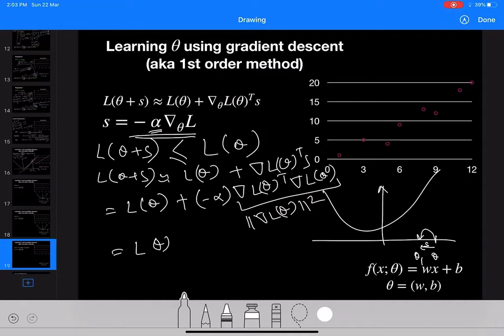So we can rewrite it as L of theta minus alpha times gradient of L of theta squared. You can see that this quantity is positive, so we are subtracting a positive quantity from L of theta, so basically it's always less than equal to L of theta.